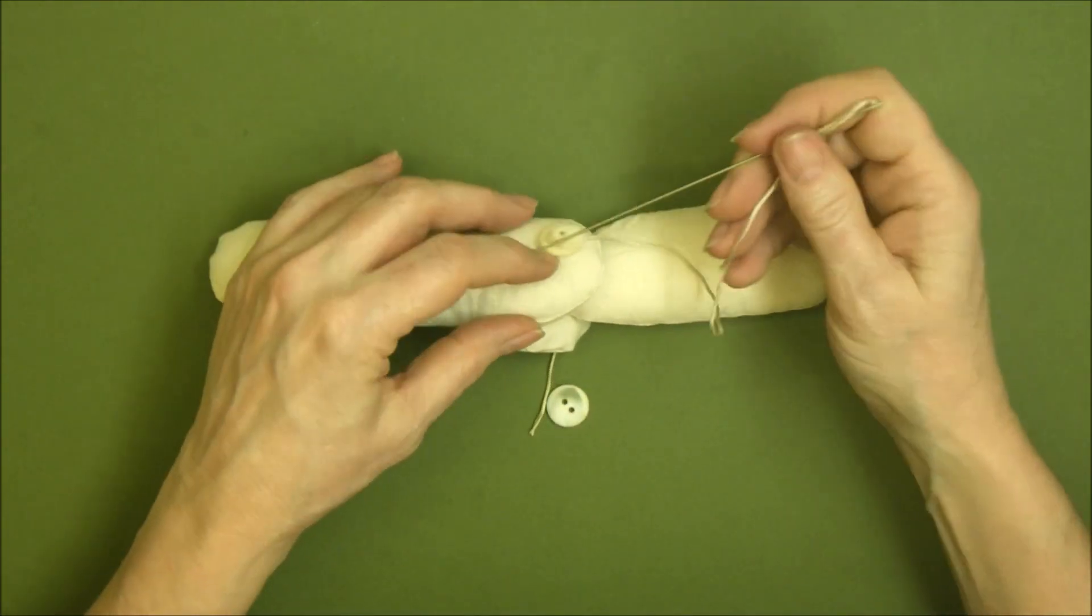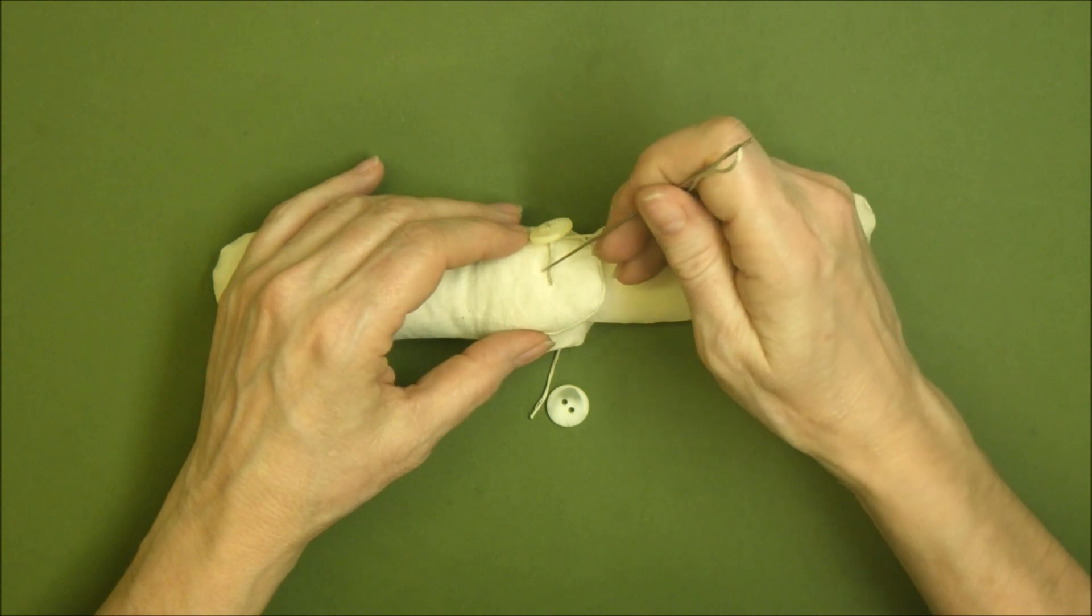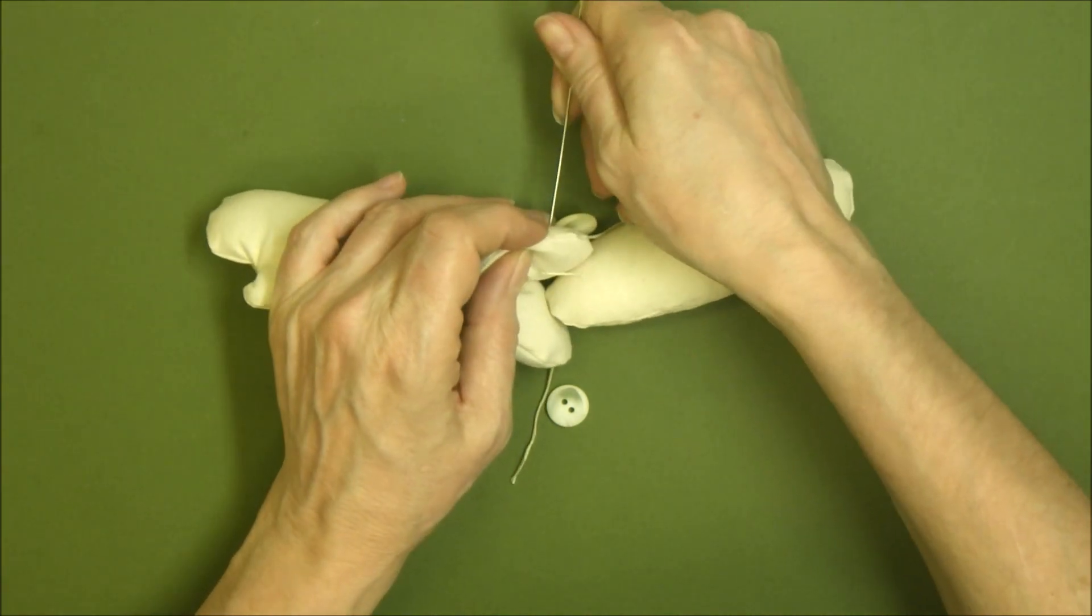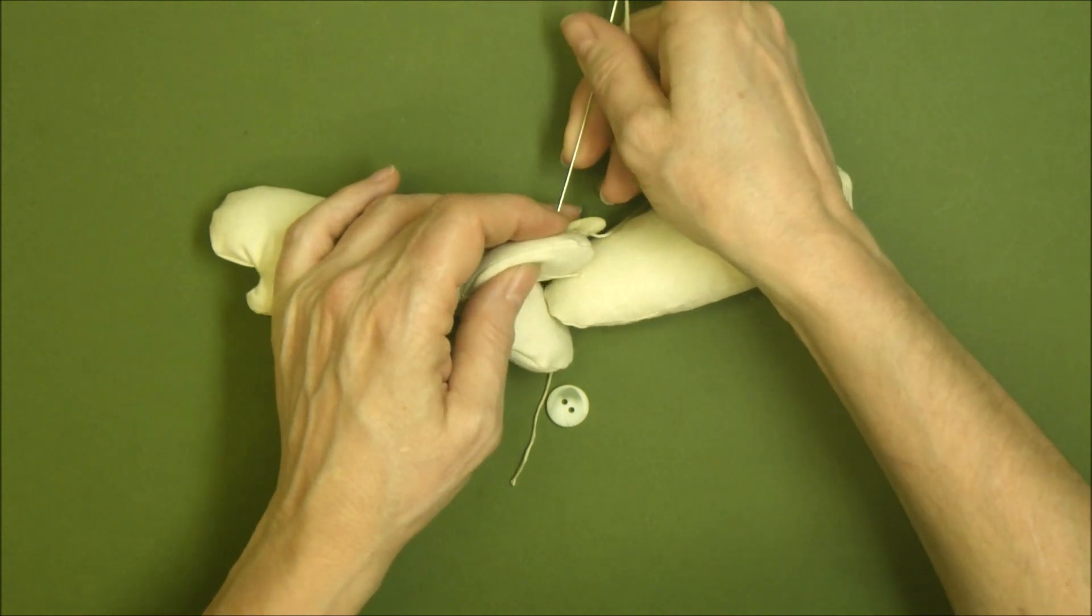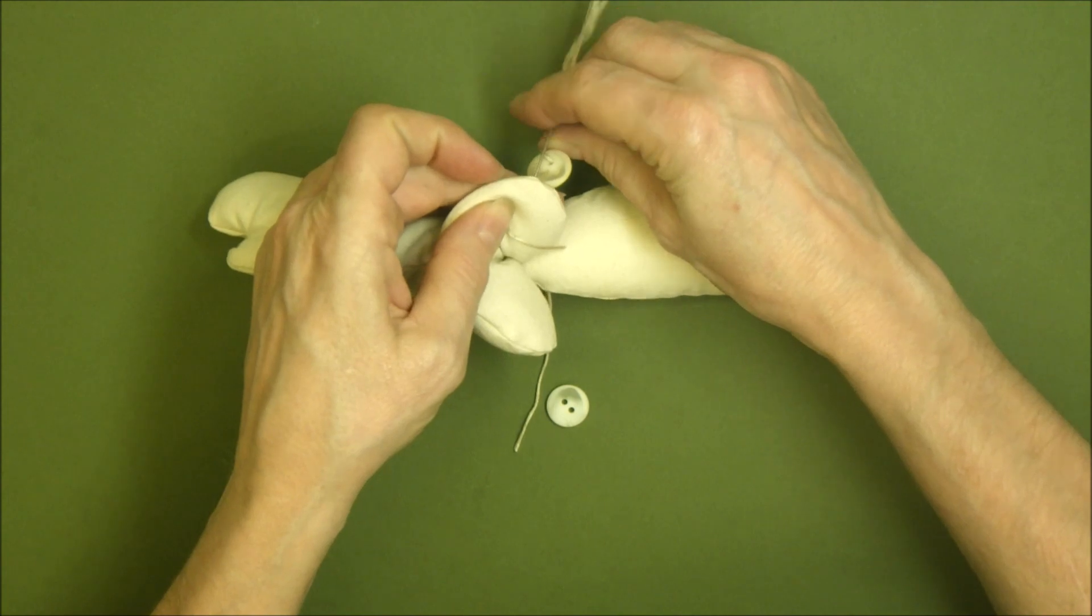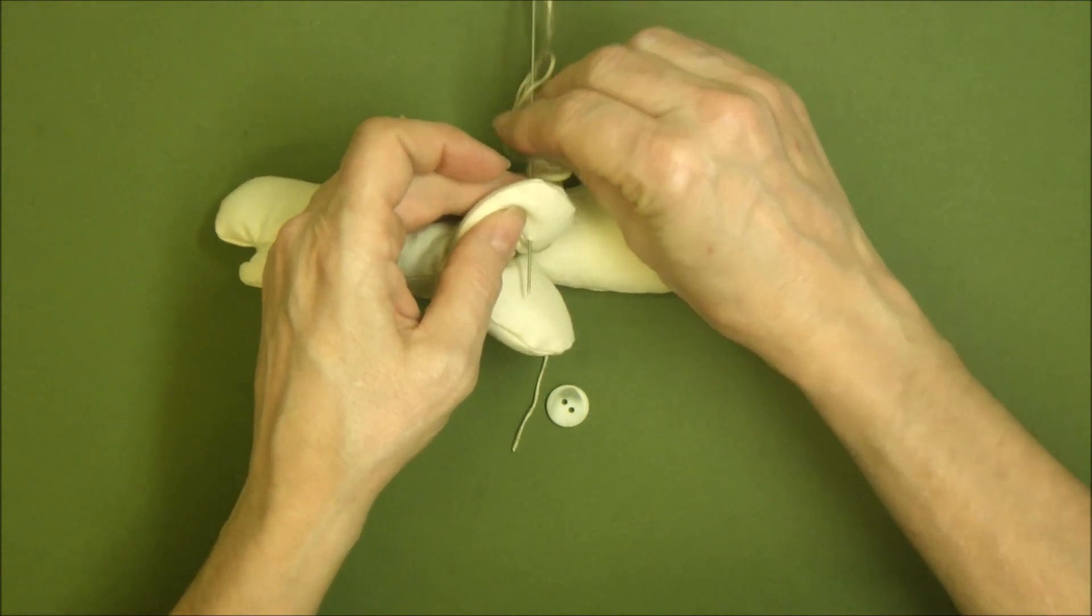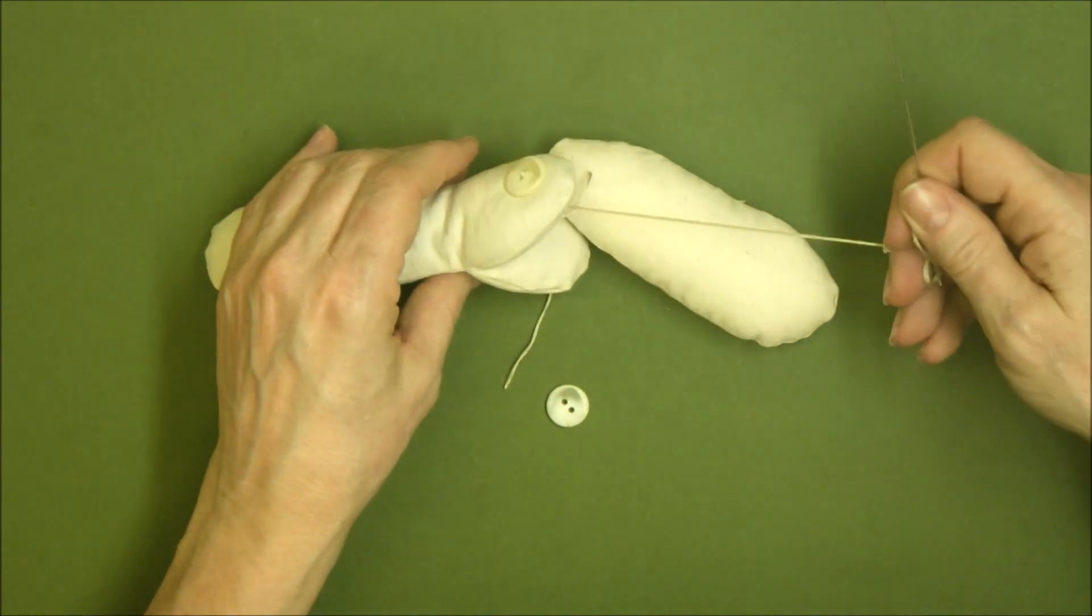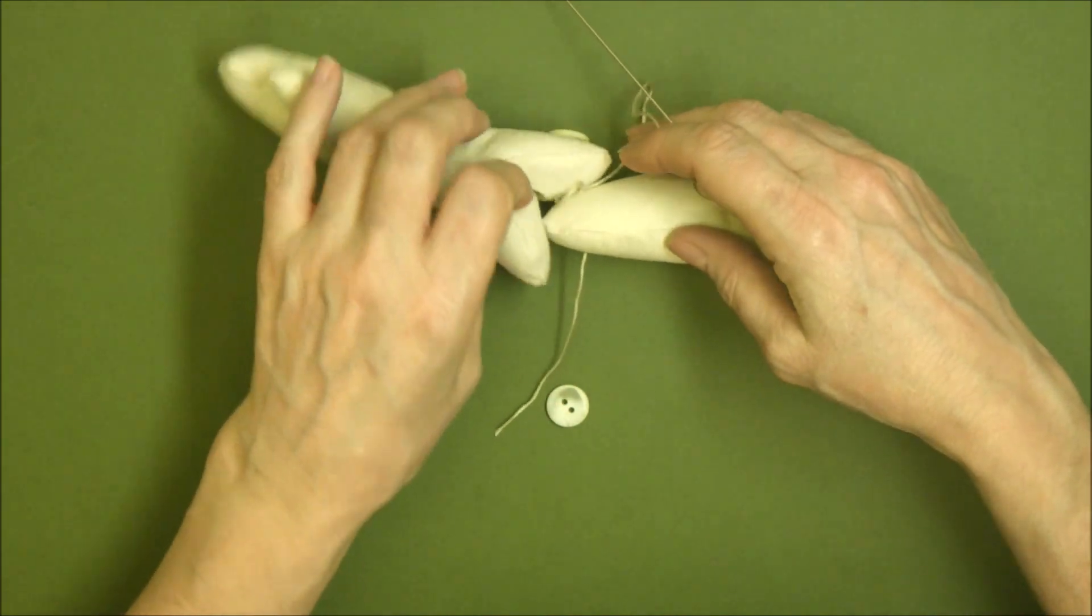Now I'm going to pass my thread back through just a few millimeters away so that I don't catch the first part of the thread. So there's a gap of a few millimeters. I can pull my thread through without it snagging on the first piece of thread I passed through.